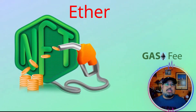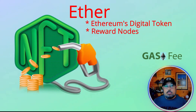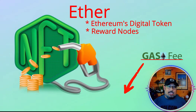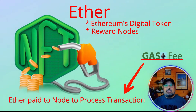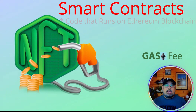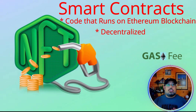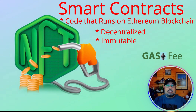Ether is Ethereum's digital token. Ether is a store of value like Bitcoin, but its main purpose is to reward nodes on the Ethereum blockchain for processing transactions. Gas is the amount of Ether that's paid to a node to process a transaction. Smart contracts are code that runs on the Ethereum blockchain — this code is decentralized, stored across all nodes in the network, immutable, and can't be changed once committed to the blockchain.